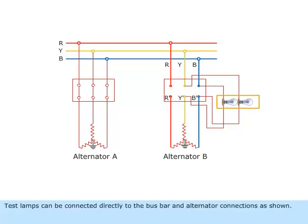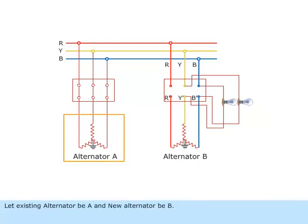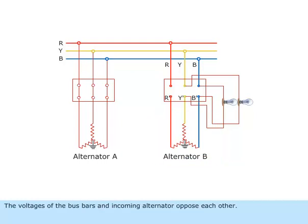Test lamps can be connected directly to the busbar and alternator connections as shown. Let existing alternator be A and new alternator be B. The voltages of the busbars and incoming alternators oppose each other.